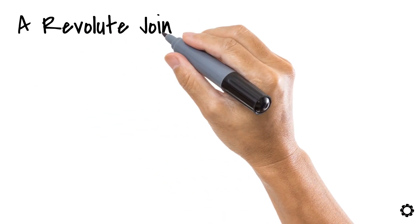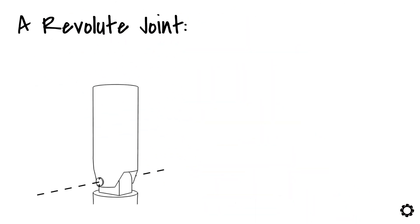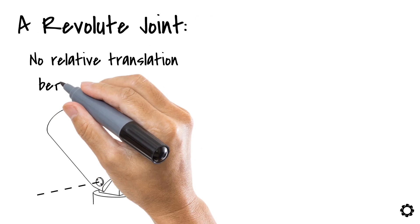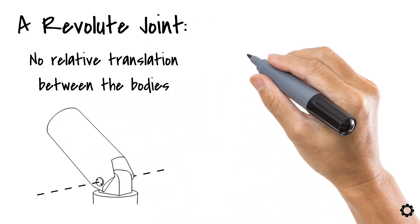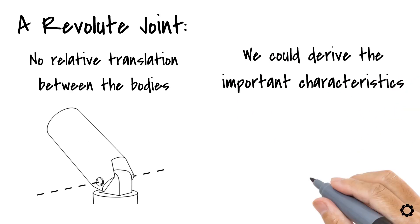A revolute joint is a constraint that only allows the relative motion of one body with respect to the other body around one specific point. No relative translation between the bodies. From the definition we've just stated, we could derive important characteristics of a revolute joint.